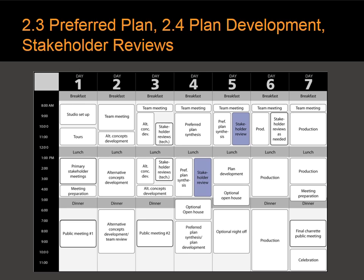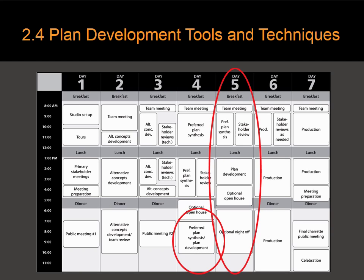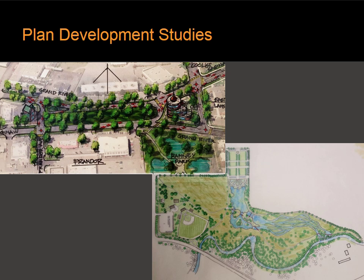More stakeholder reviews are scheduled in the preferred plan synthesis phase before a possible open house, as well as in the plan development phase. You space these stakeholder reviews out as necessary — some stakeholders need to come in twice. For example, the Department of Transportation might come in on day three and again on day five. The plan development phase takes place after the preferred plan is developed. This is where you detail out the plan, breaking off into specialties: landscape architects on drainage, transportation engineers on street sections, code people on the codes, urban designers on the urban design plan.